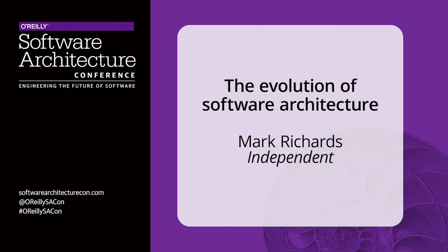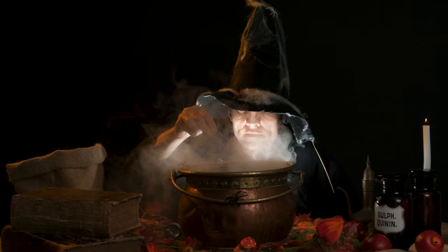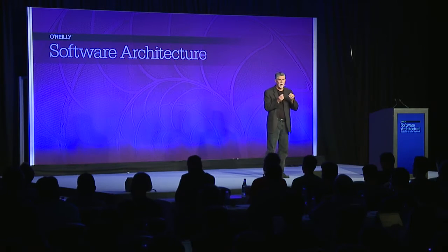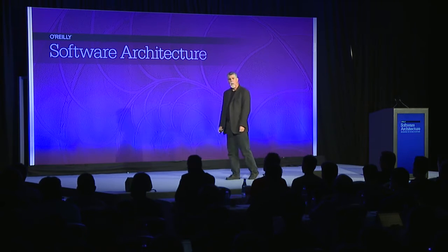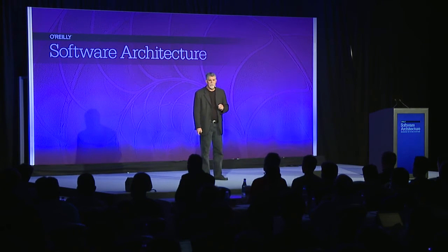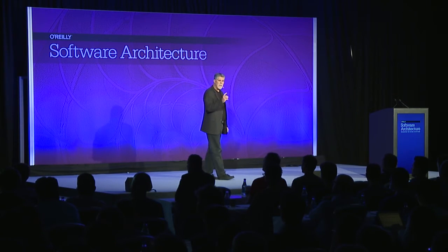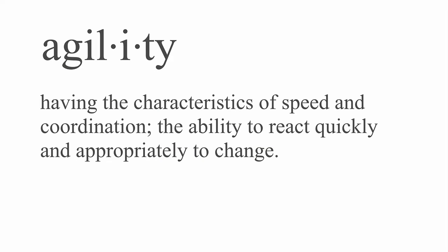I like to think of it as ingredients that go into an evolutionary cauldron, and there are three of these factors that have led to the evolution of software architecture, hardware, and business as well. The first of those evolutionary ingredients is agility — having the characteristics of speed and coordination, the ability to react quickly and appropriately to change. This is the problem: most companies focus solely on agility and fail, because it's only one of the ingredients in that evolutionary cauldron.